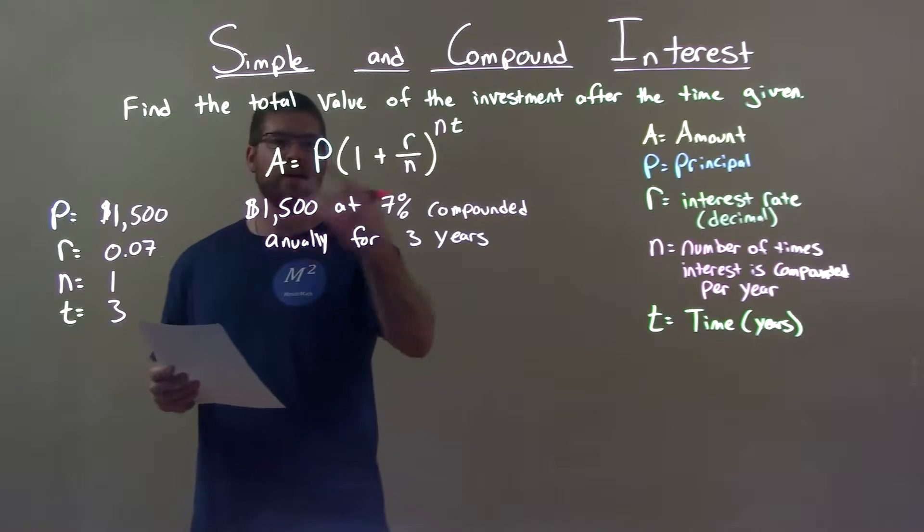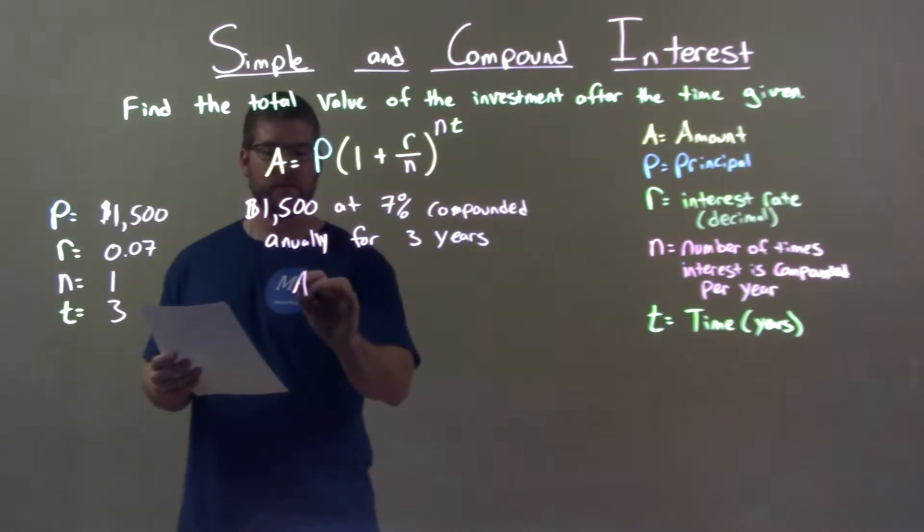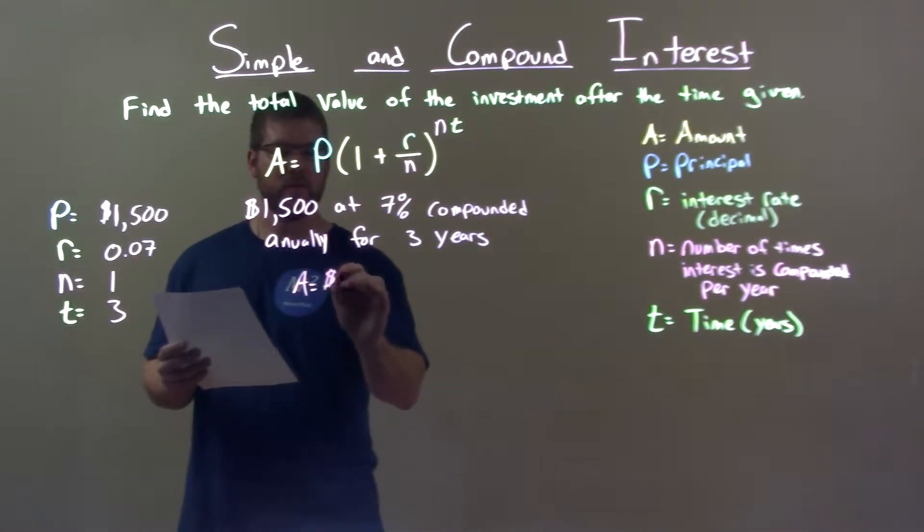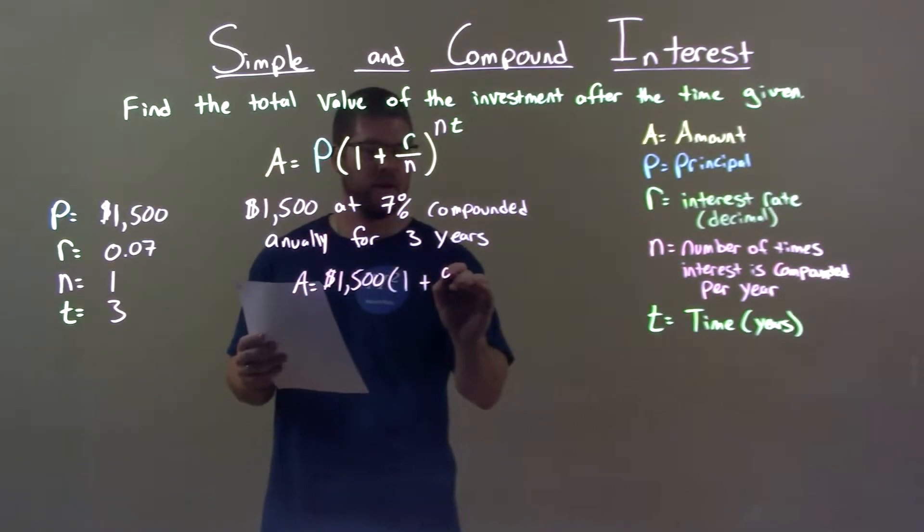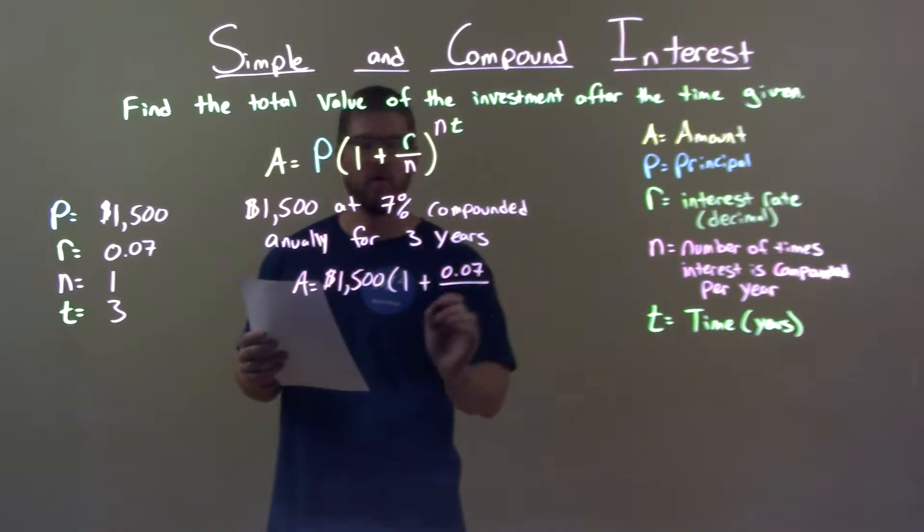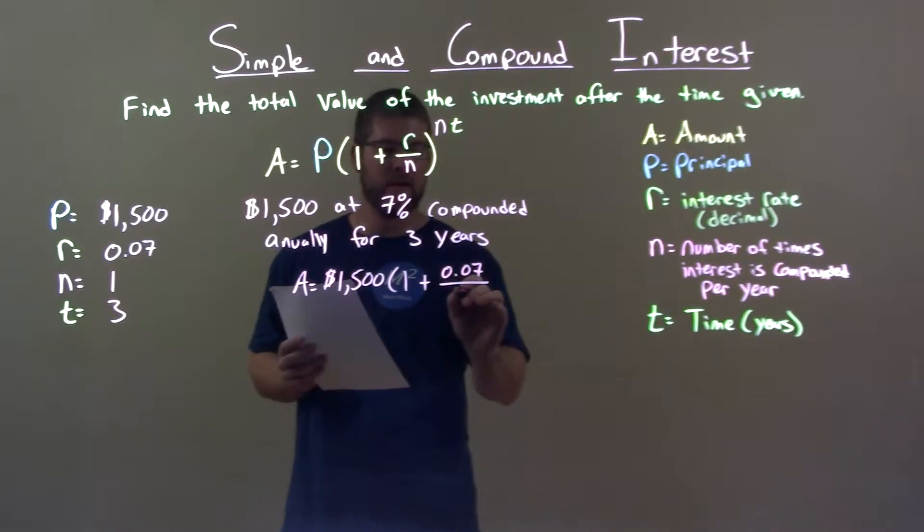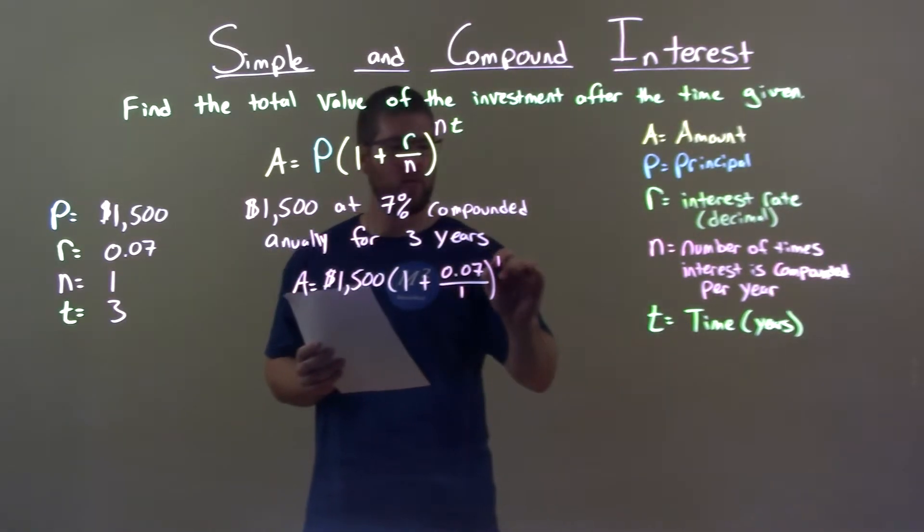With all of that, we plug it into our formula for compound interest. A equals principal, $1,500 multiplied by 1 plus our interest rate as a decimal, 0.07 over the number of times we're compounding in a year, which is 1, to that 1 times 3, the number of years power.